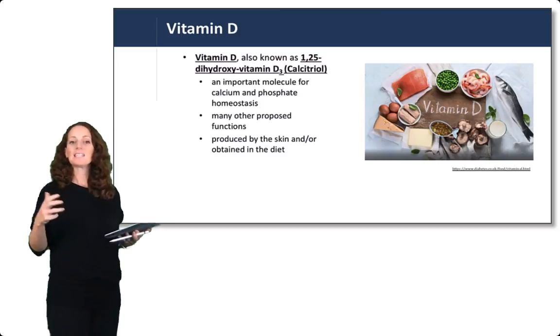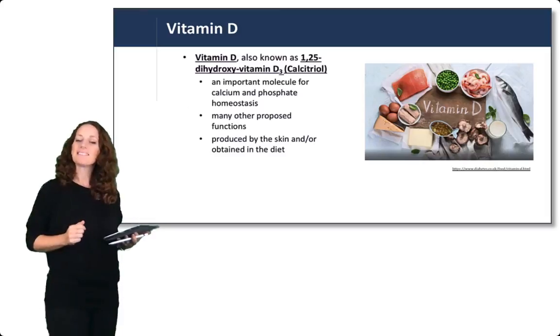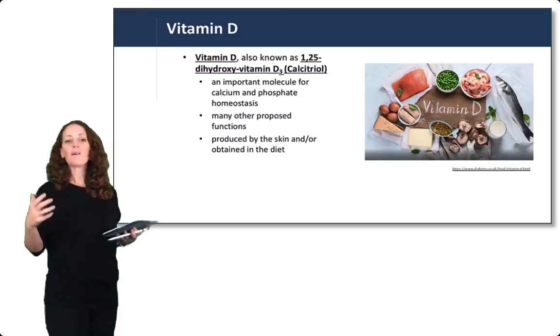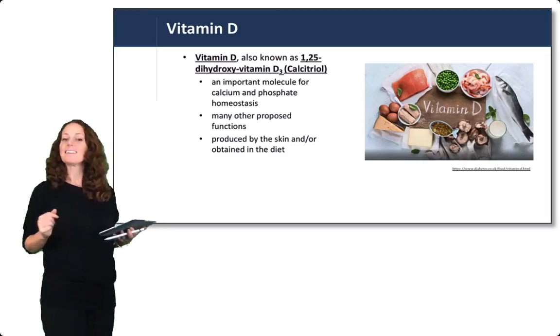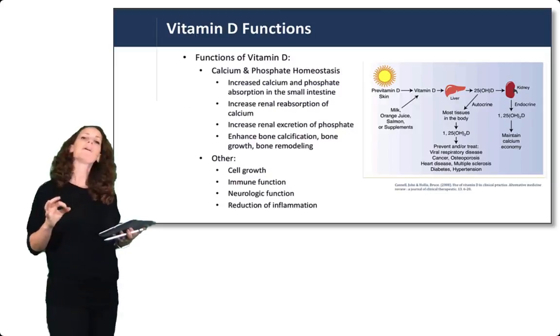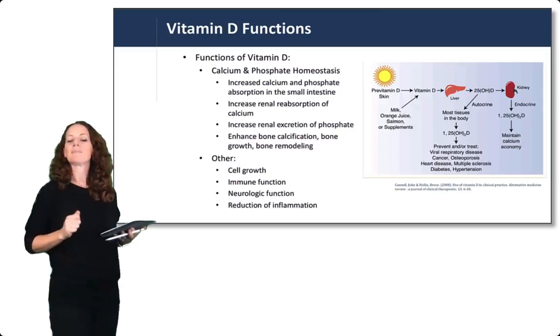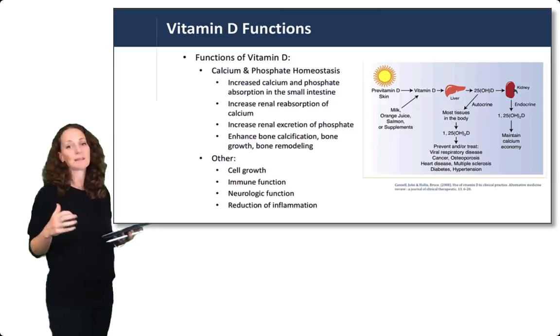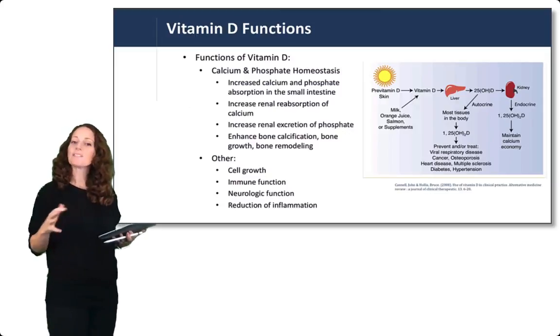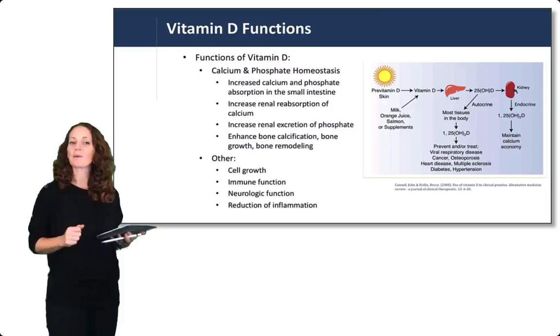Vitamin D is produced by the skin, but it can also be obtained in the diet. The primary function of vitamin D, as we understand it now, is for calcium and phosphate homeostasis.